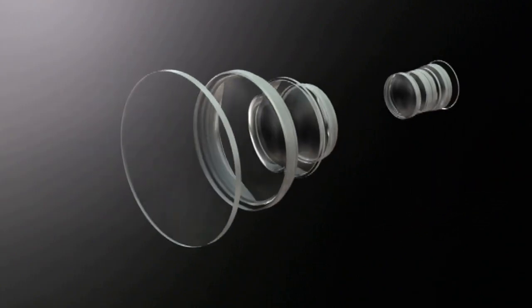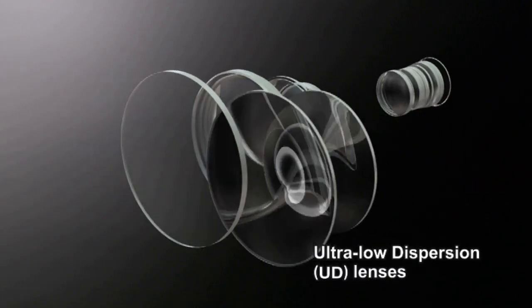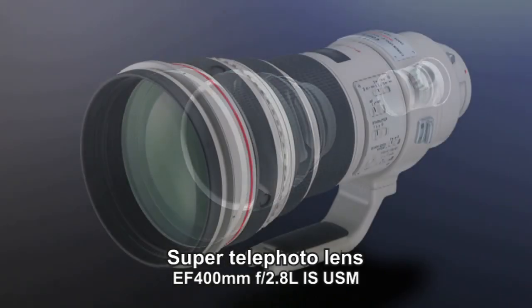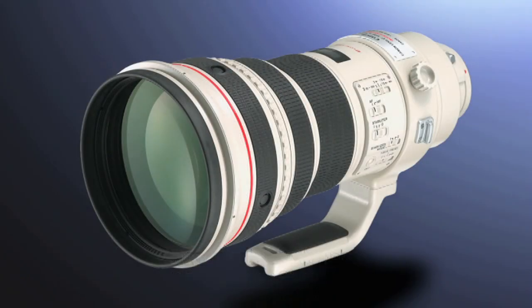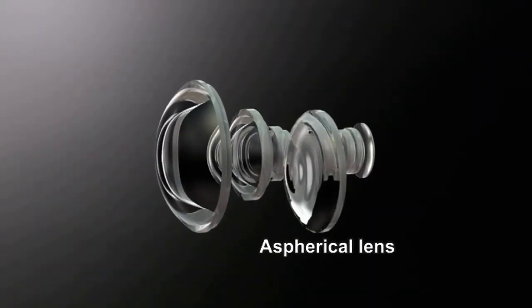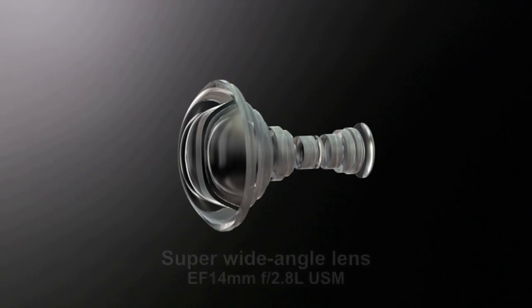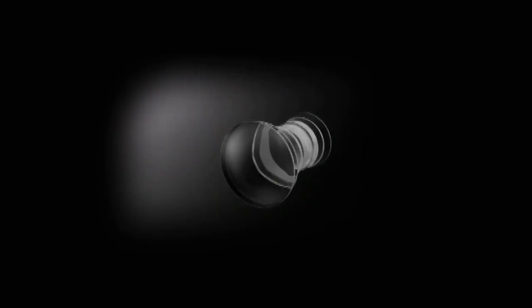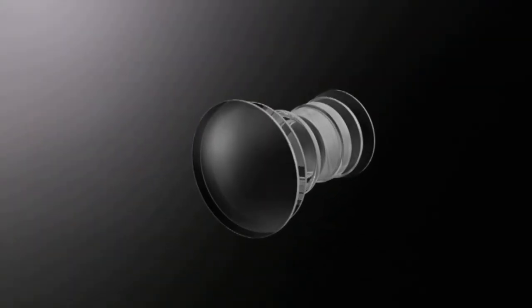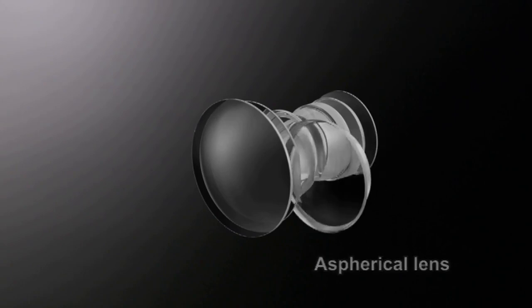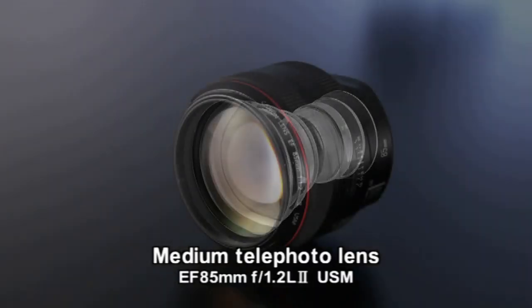The correction of chromatic aberration using UD and fluorite lenses has increased the image quality of super-telephoto lenses. The distortion correction achieved by aspherical lenses has made possible the development of super-wide-angle lenses. Medium telephoto lenses using large-aperture aspherical lenses have dramatically improved photographic performance.